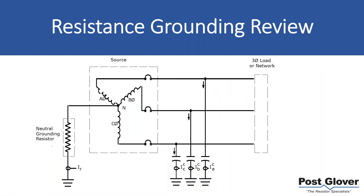Starting with our three-phase power system: the goal of resistance grounding is to take the best of an ungrounded system and the best of a solidly grounded system and eliminate the worst of both. Technically, it's a resistor between neutral and ground in series. A solid ground connection has no resistor; an ungrounded connection has nothing to ground at all.